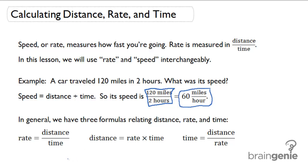Each of these three formulas is solved for a different variable. For example, we can always find rate to be distance divided by time. That's our first formula.